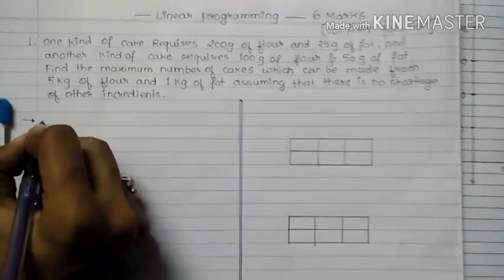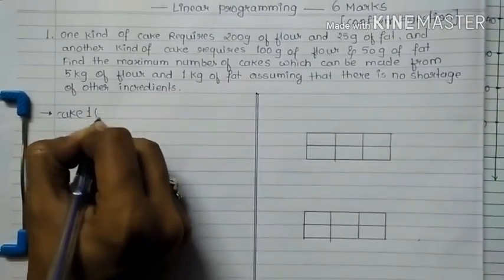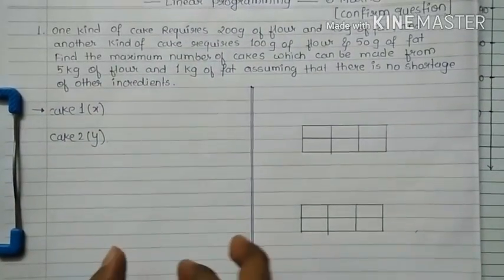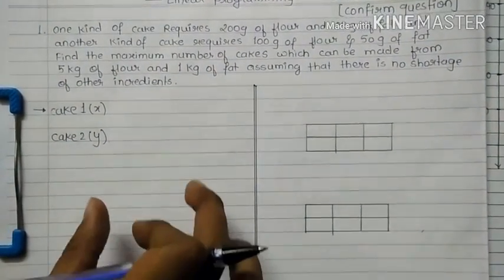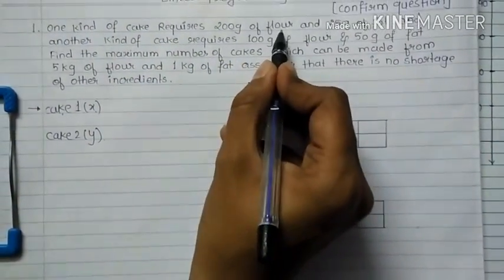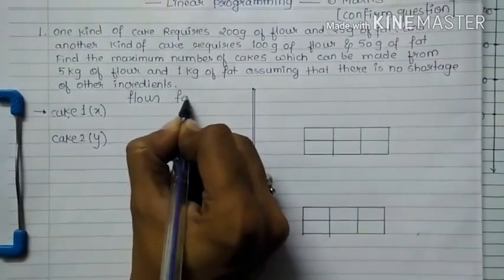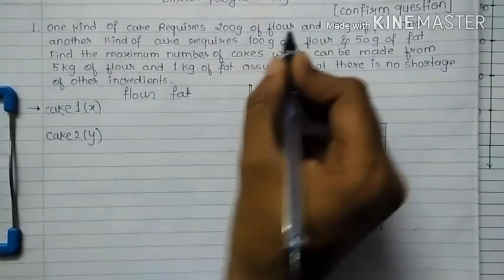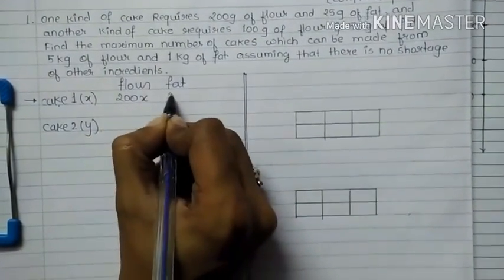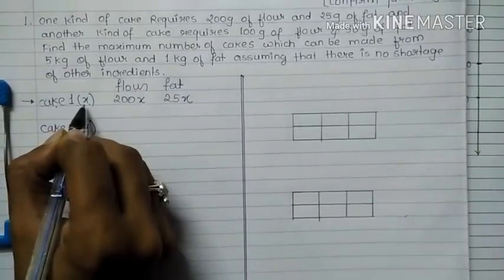In this question, we have two kinds of cake — cake 1 and cake 2. Let's say cake 1 is x and cake 2 is y. If you make a table, it would be easy to understand the question and make the equations. The first kind of cake has two main ingredients: flour and fat. It requires 200g of flour and 25g of fat, so that gives us 200x and 25x.